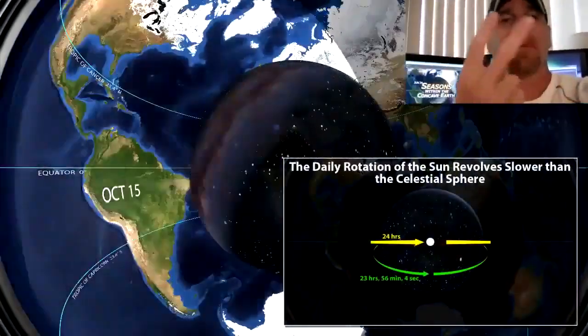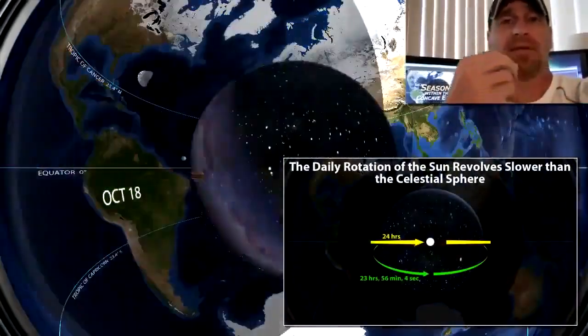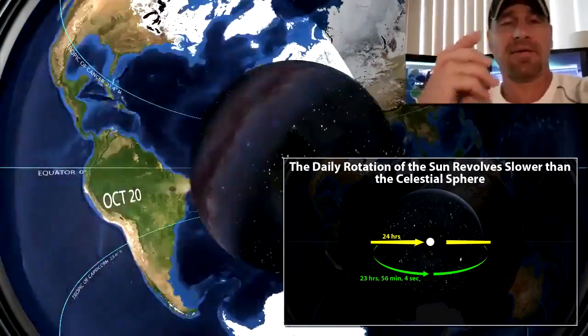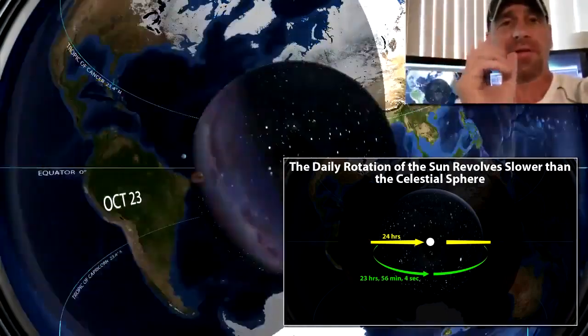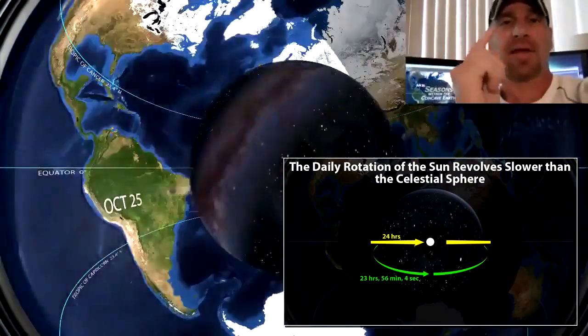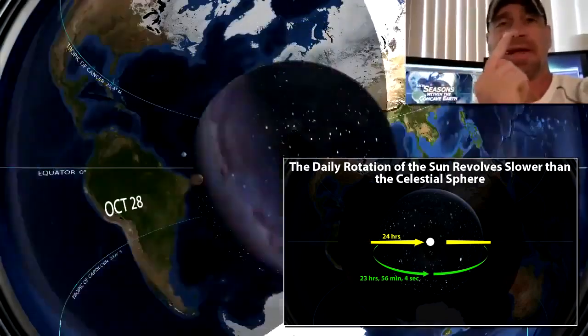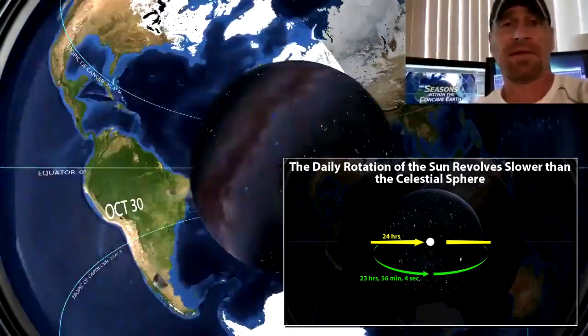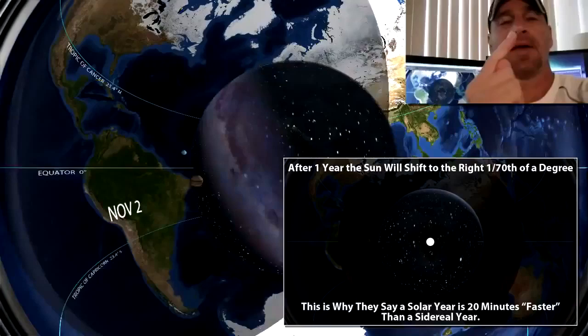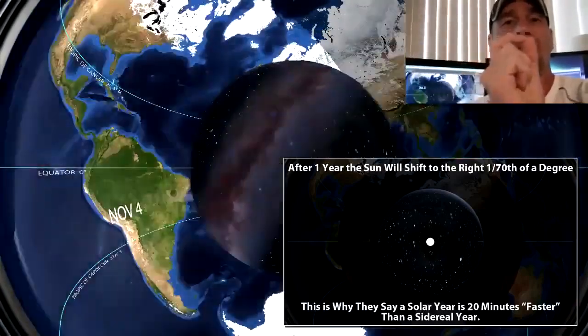Simply by the fact that there's two different velocities: the velocity of the Sun and the velocity of the celestial sphere, which is slightly faster than the Sun. A sidereal year or sidereal day is four minutes faster than the Sun, so after a full year's time, the Sun is simply just going to be 1/70th of a degree in a different location than the year before.